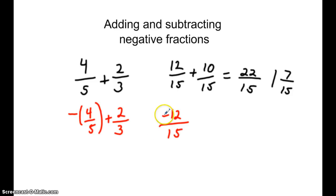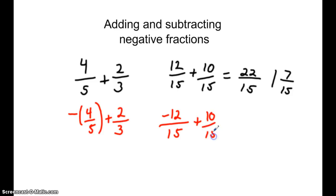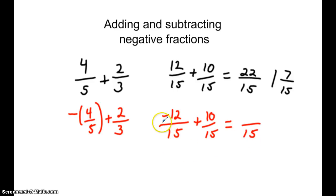So now this is going to be negative 12 fifteenths plus 10 fifteenths — the second fraction has not changed, it is still a positive number. Now here is where the difference is: we apply the rules for integers. The denominator stays the same, so we are looking at negative 12 plus a positive 10, and that will give us negative 2 fifteenths.